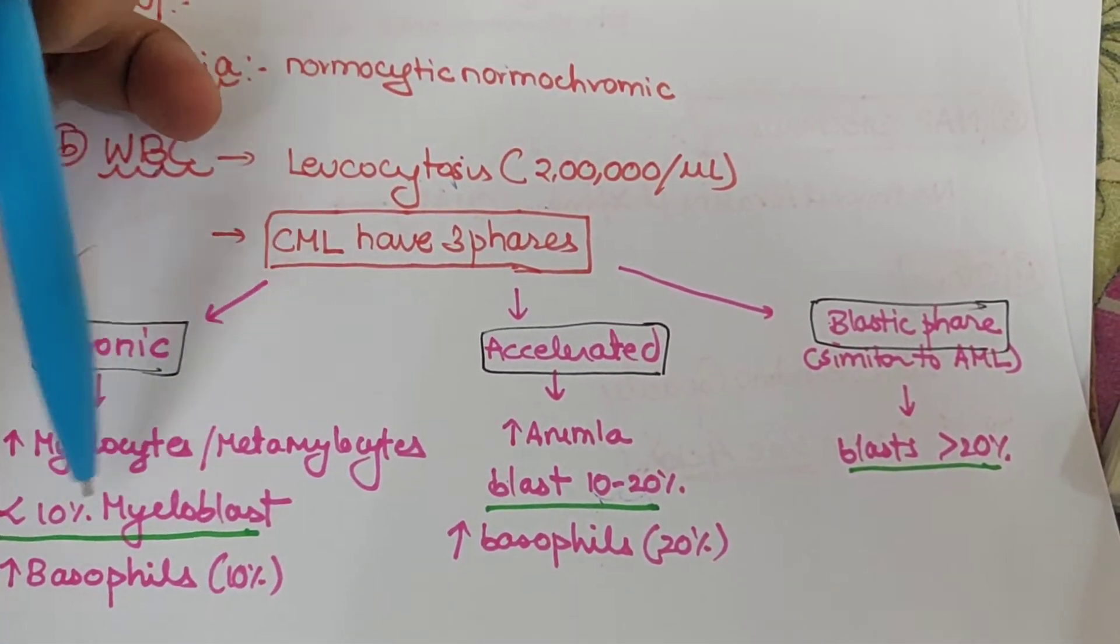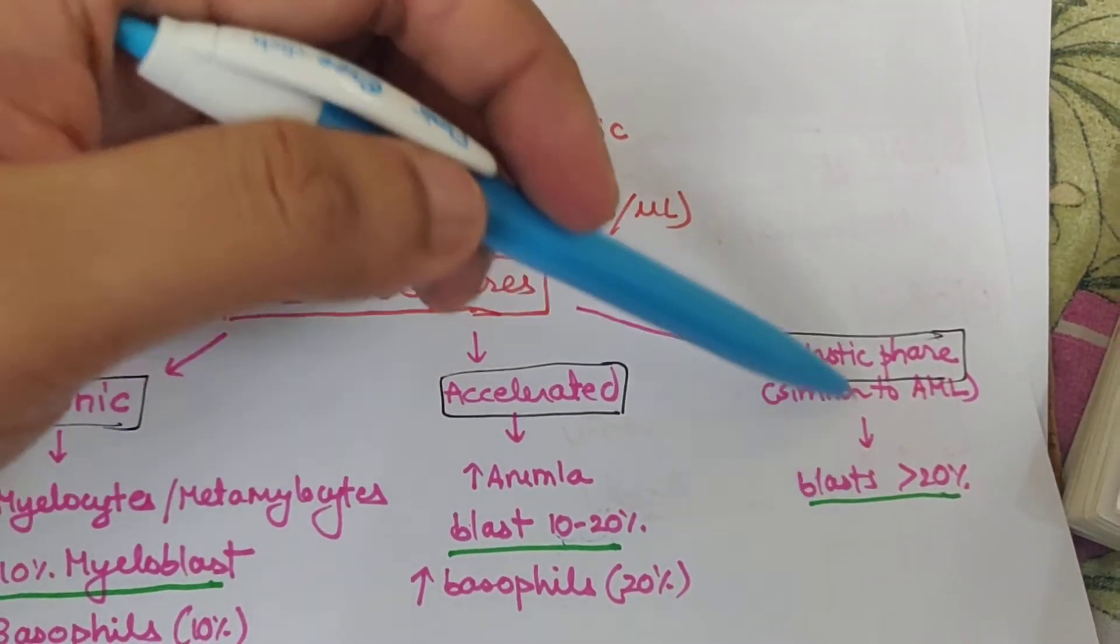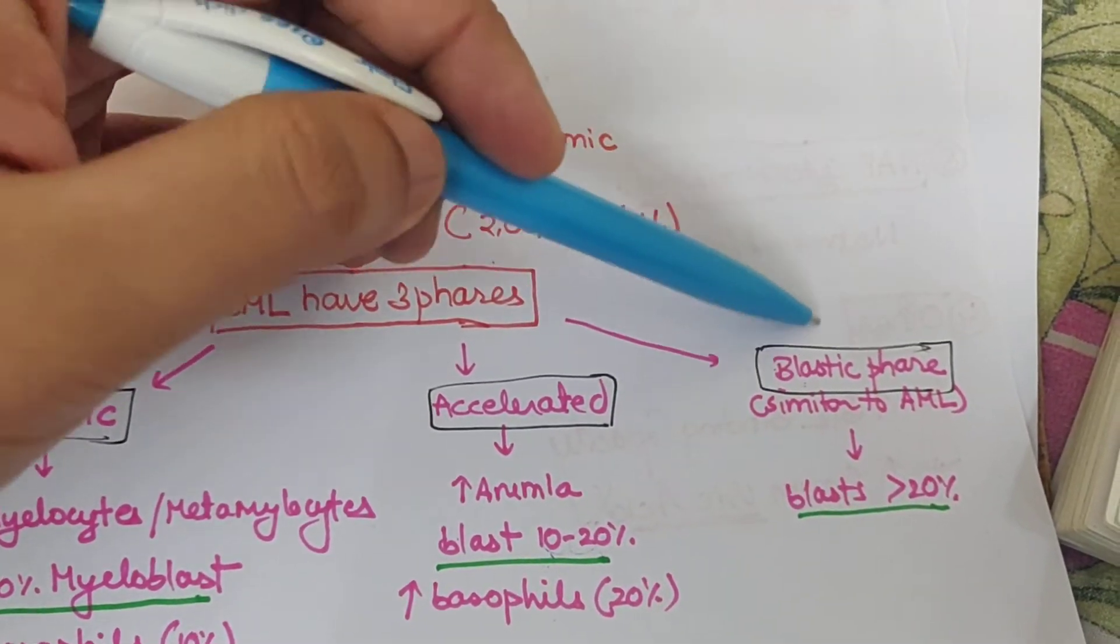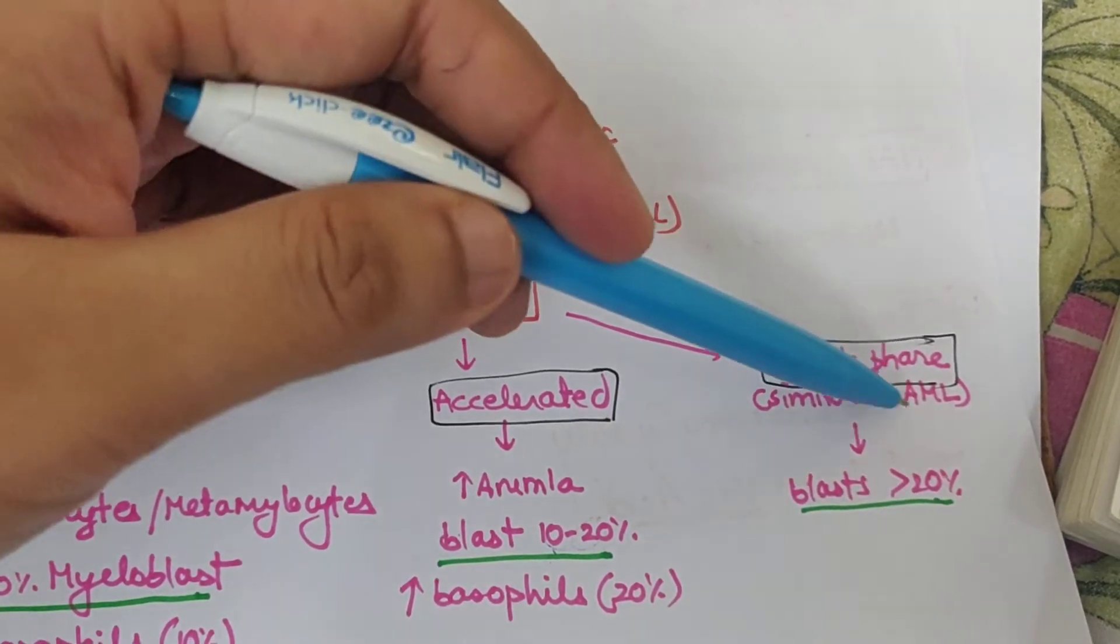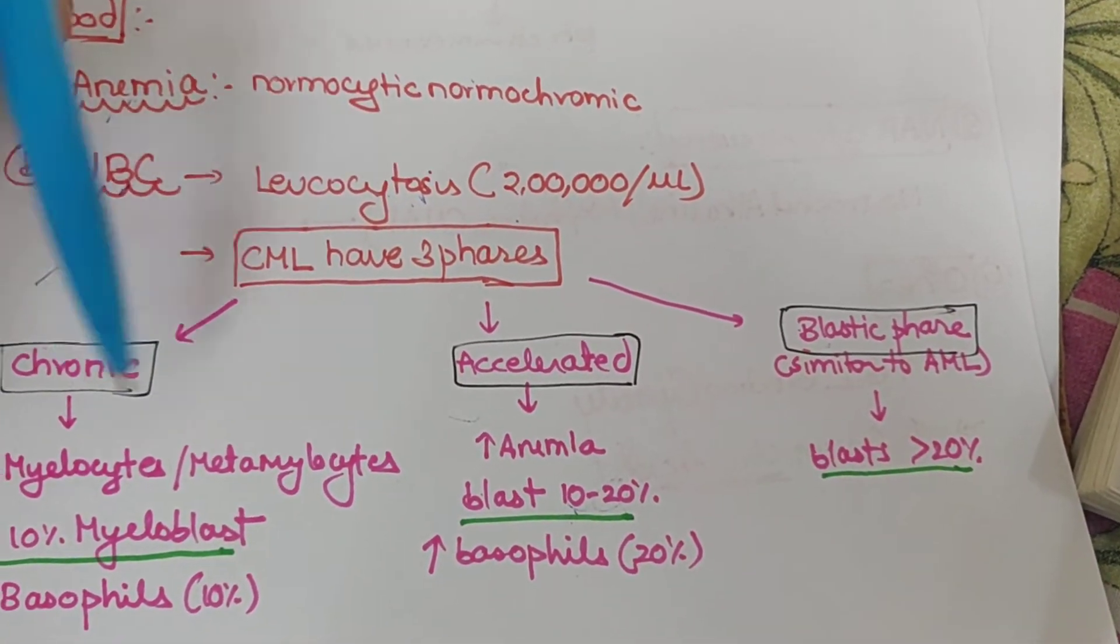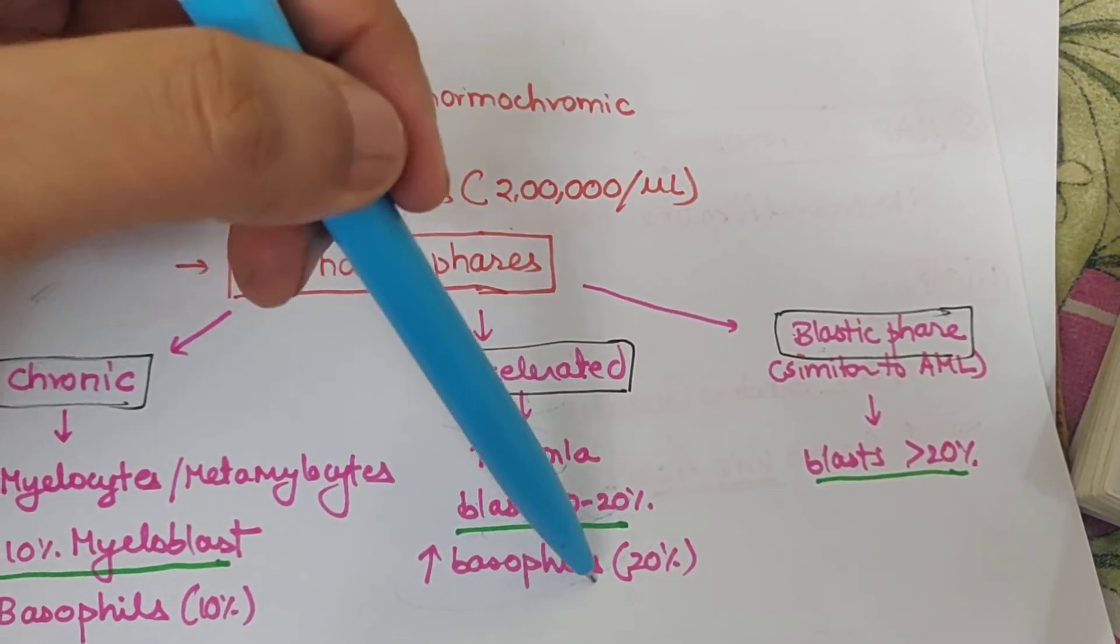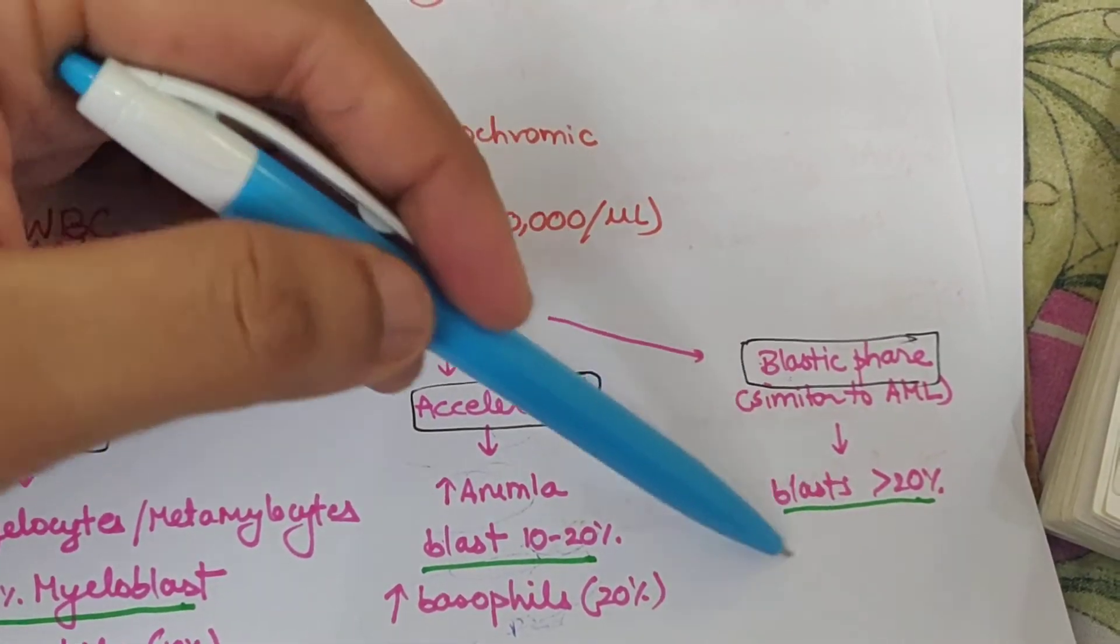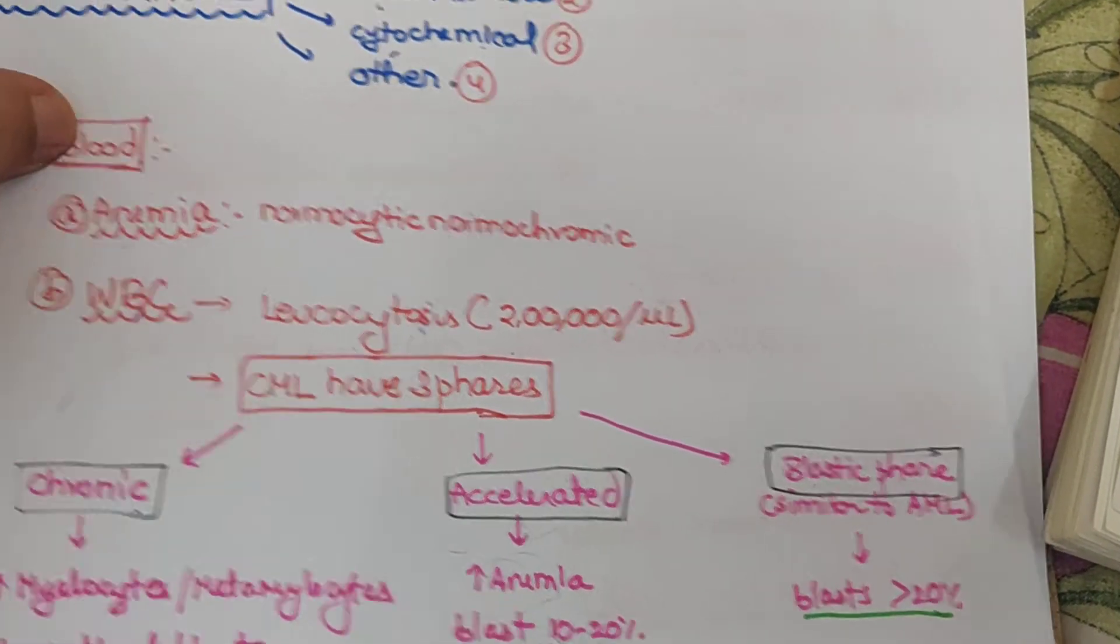Blast numbers increase progressively: less than 10% myeloblasts in chronic phase, 10 to 20% in accelerated, and greater than 20% in blastic phase. Blastic phase is similar to AML except we can't see Auer rods, which are present in AML but absent in CML. In accelerated phase basophils increase to about 20%. In blastic phase there are about 20% blast cells.